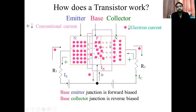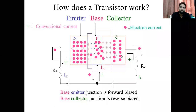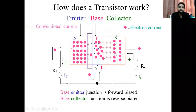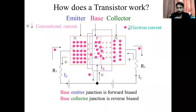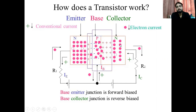The remaining 95 to 98 electrons move toward the collector and are collected by it. By varying the current or applying a field at the base terminal, we can change the recombination rate from 2% to 5% or more. As the recombination rate changes, the total collector current is affected. This is the main phenomenon — the base controls recombination, which in turn controls the collector current.